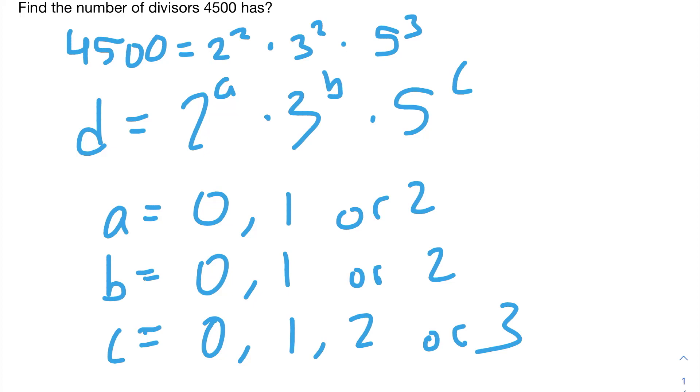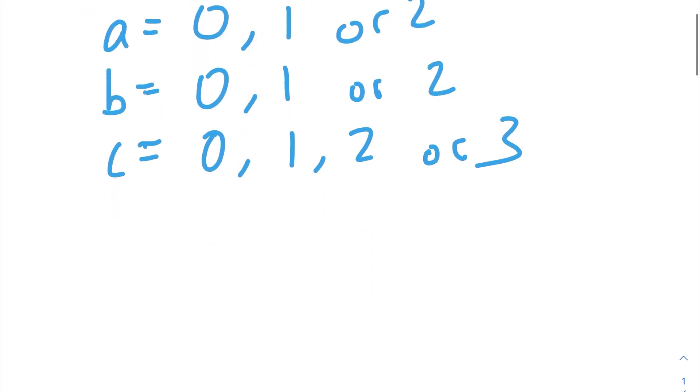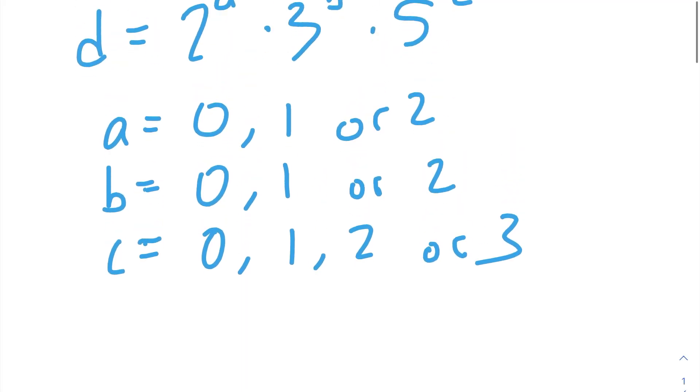So now, we're going to use a little bit of combinatorics to find out how many divisors 4,500 has. Any divisor D can either have 0, 1, or 2 twos. So, it can have 3 different numbers of 2s. Each different value of D could have 0, 1, or 2 threes. So, we have 3 different options for how many 3s we want.